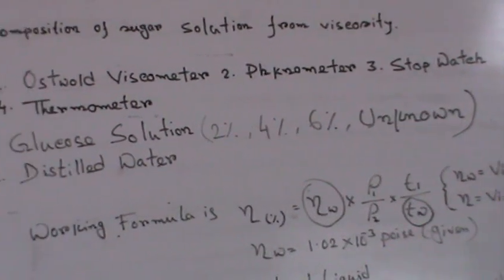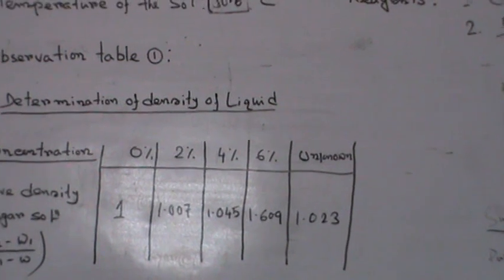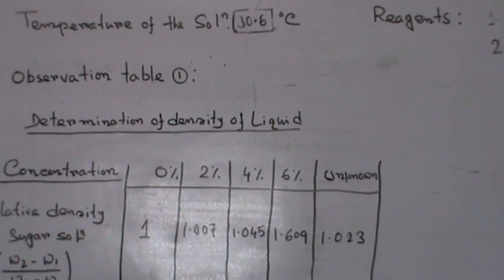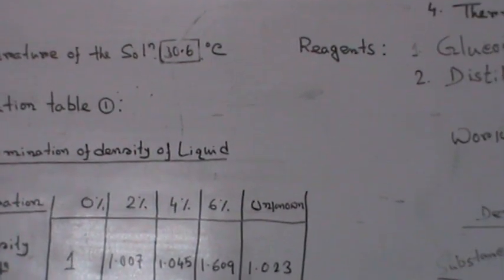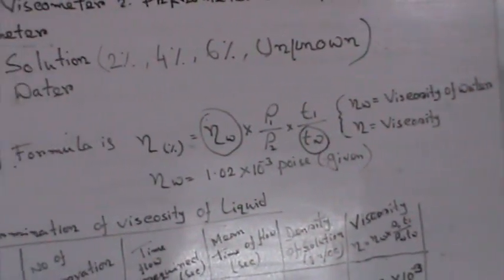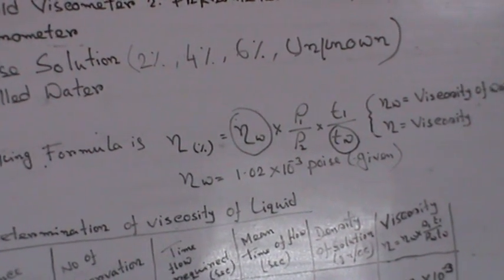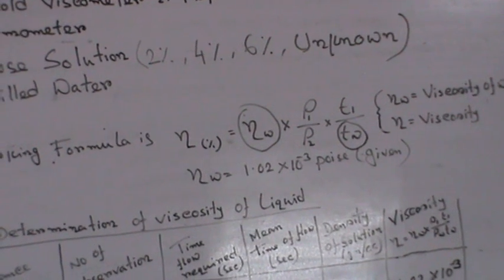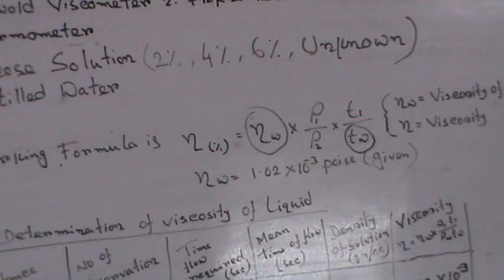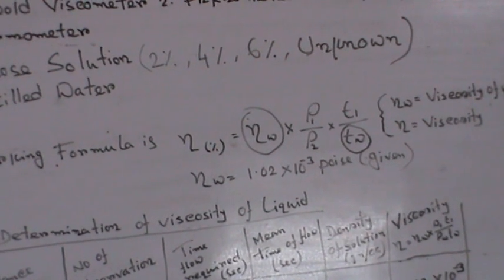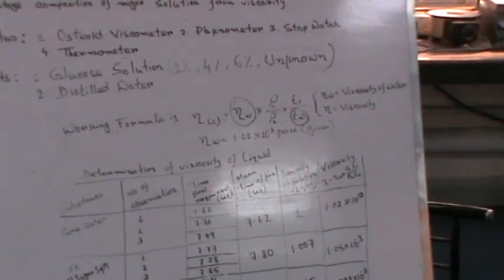The rho1 and rho2 values are taken from the previous density table — for water solution, two percent, four percent, six percent glucose solution, and the unknown percentage glucose solution. These give us the rho1/rho2 values. T_w is the flow time for water, which is constant for all readings, while T1 varies for each solution.